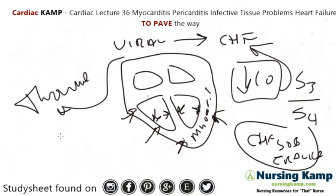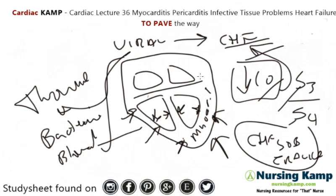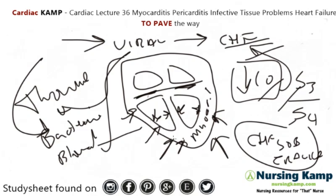They could also have thromboembolisms, which are usually the result of bacterial myocarditis. You would do blood cultures to see if it's viral or bacterial. But if they present with CHF symptoms and there's no cardiac history — only a recent viral or bacterial infection — it's usually myocarditis.